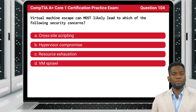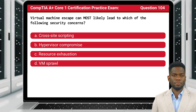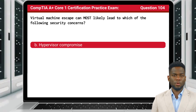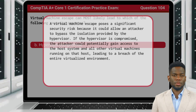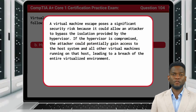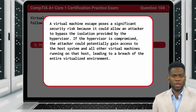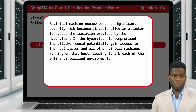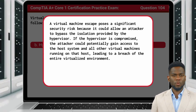Question 104: Virtual machine escape can most likely lead to which of the following security concerns? The answer is B: Hypervisor compromise. A virtual machine escape poses a significant security risk because it could allow an attacker to bypass the isolation provided by the hypervisor. If the hypervisor is compromised, the attacker could potentially gain access to the host system and all other virtual machines running on that host, leading to a breach of the entire virtualized environment.